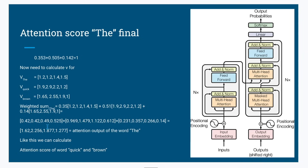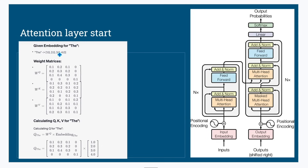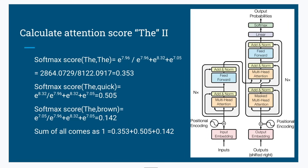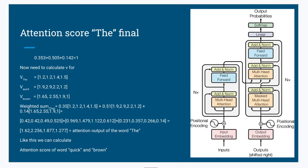This is the modified final number. The previous vector was [1, 2, 3, ...] and the finalized output number is [1.62, 2.56, 1.87]. This is the example for 'the' only. In the similar manner, we need to calculate for 'quick' and 'brown' as well.